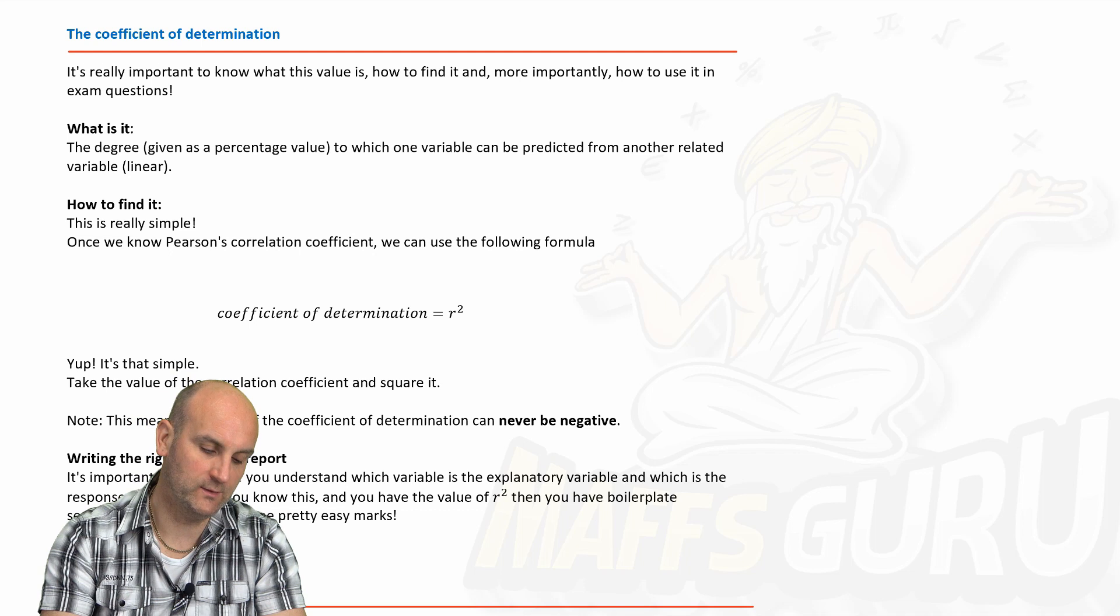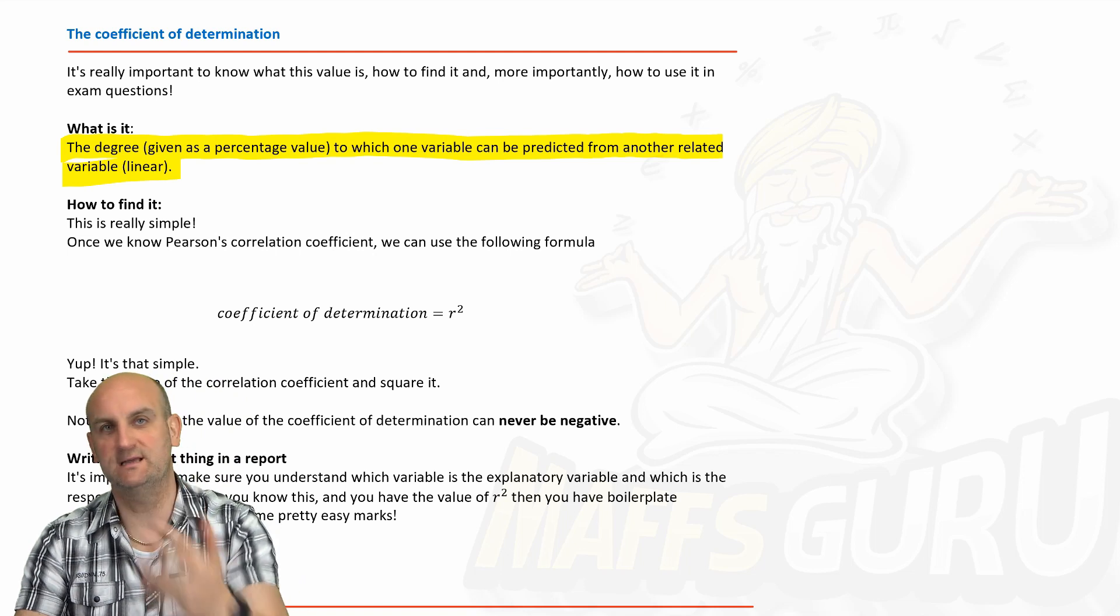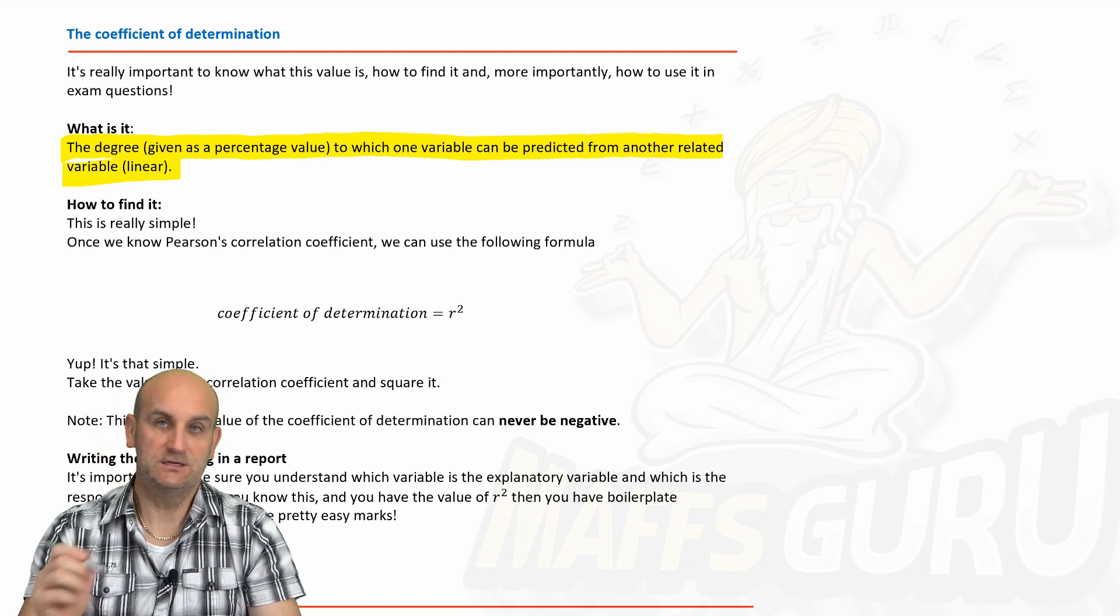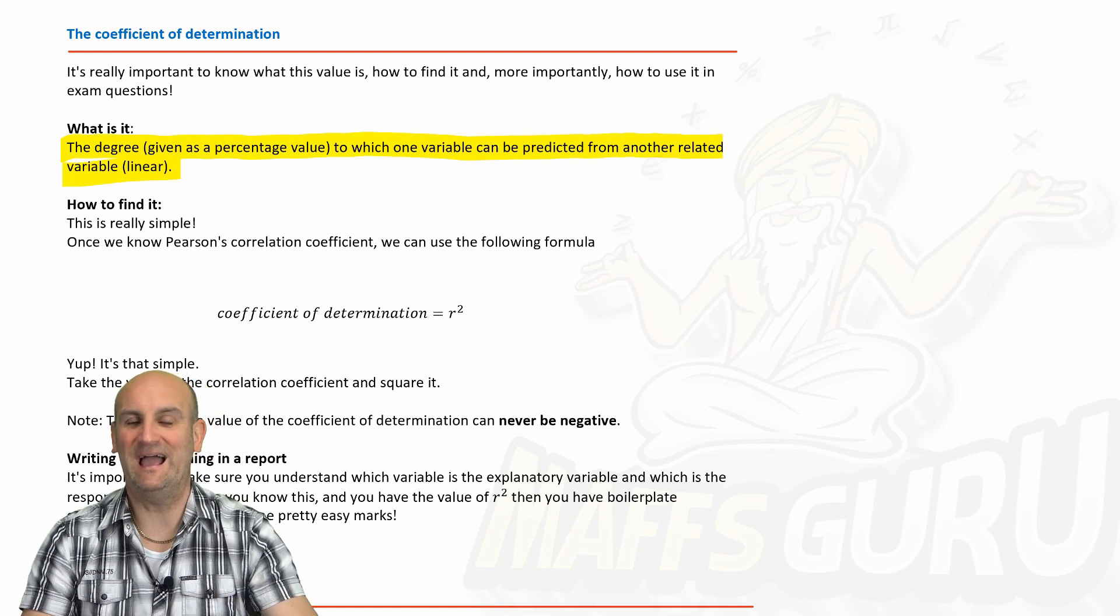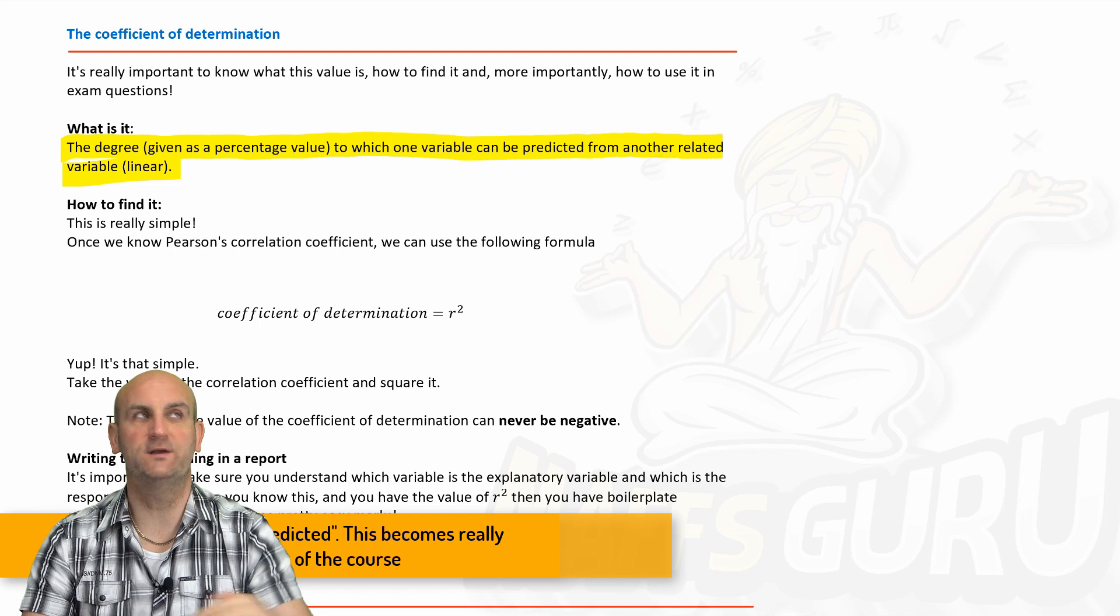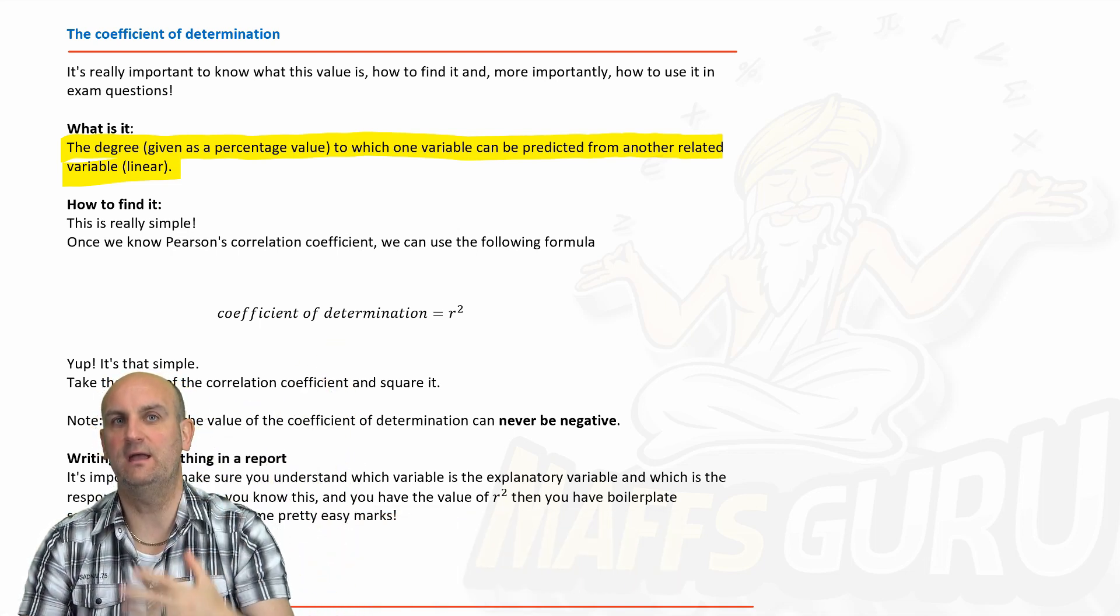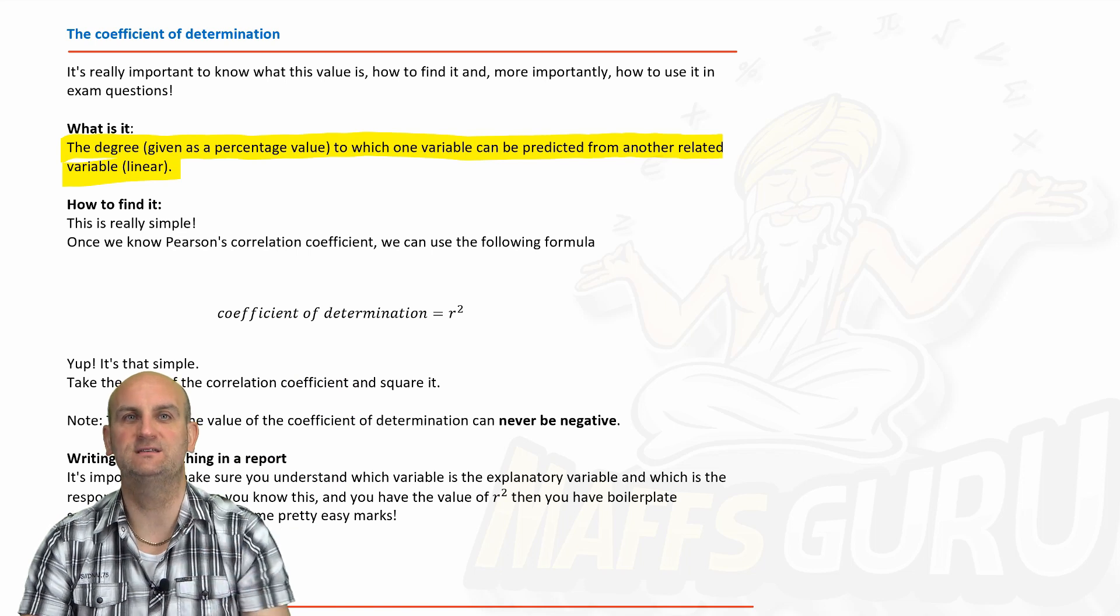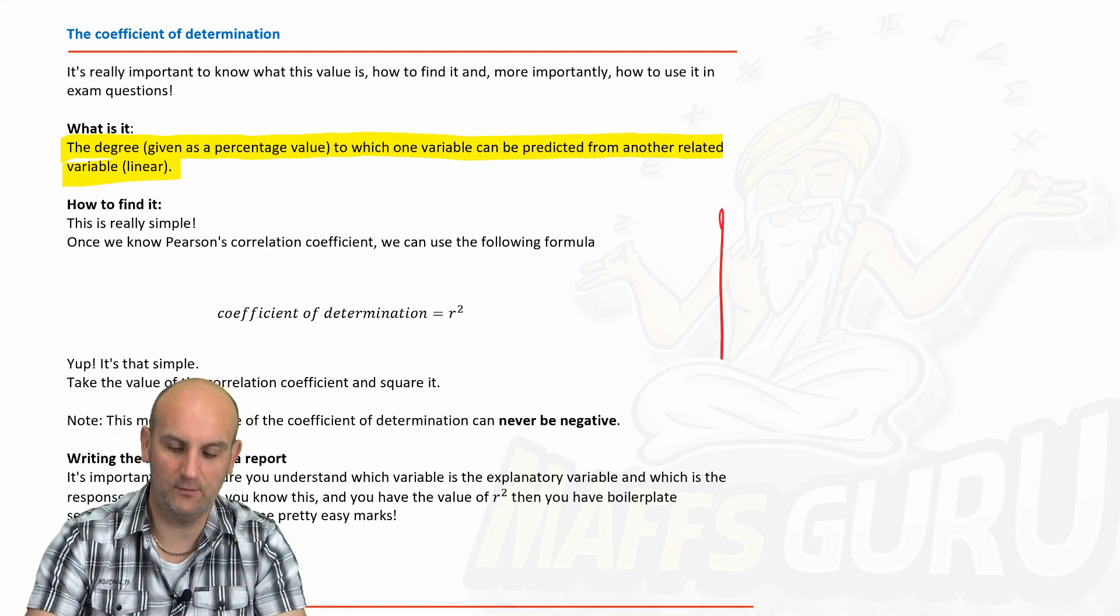Now, it is important that you understand here that the coefficient of determination is the degree given as a percentage to which one variable can be predicted from another. So, for example, if I have math scores and science scores, can I actually find a value that says how likely it is to predict a science score from a math score? And again, I'll just draw that again. Here we go.